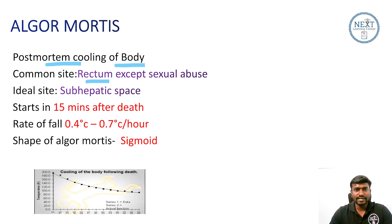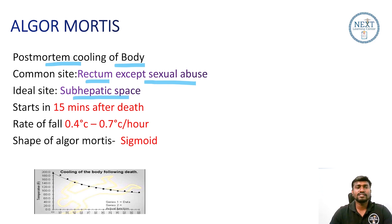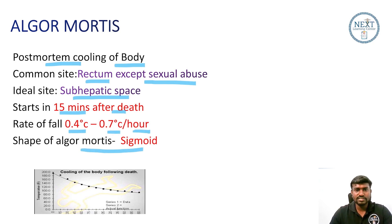The common site for measuring algor mortis is the rectum. The ideal site is the sub-hepatic space. Cooling starts at 50 minutes after death. The rate of fall is 0.4 to 0.7 degrees per hour, and the shape of the cooling curve is sigmoid.